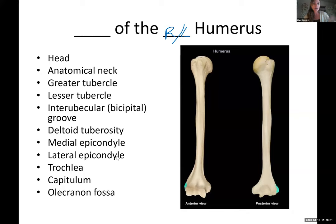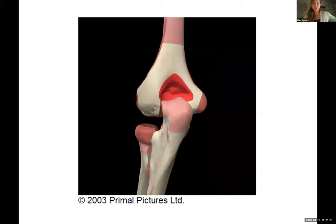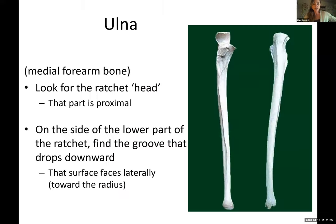The olecranon fossa — that's the dip in the back, our little soup ladle. Here are some pictures from a primal picture CD showing you some of these features. Now we'll go to the forearm bones. We have the medial and lateral forearm bones.